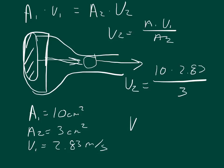Velocity 2 is 9.433 meters per second. So it sped up from about 2 to 9 meters per second by decreasing the cross-sectional area.